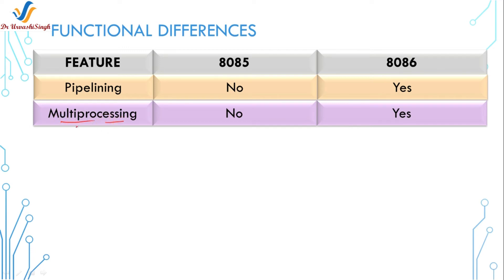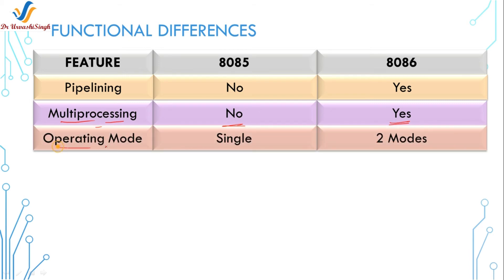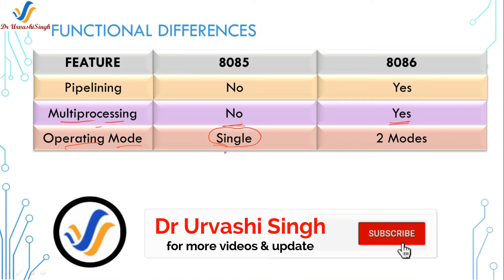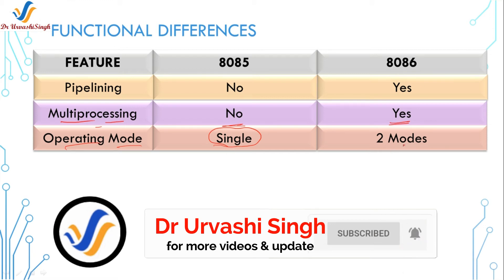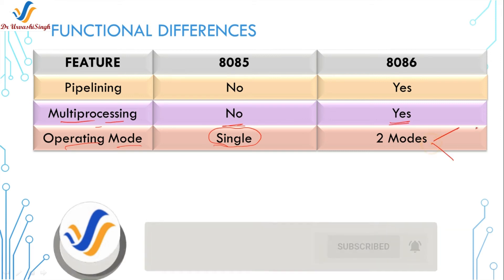The next functional feature is multiprocessing. As the name suggests, this is the concept where a microprocessor can work with other processors simultaneously. The 8086 supports multiprocessing, but the 8085 does not. This affects the operating mode: the 8085 can only operate in single mode, while the 8086 — since it supports multiprocessing — has two modes of operation.